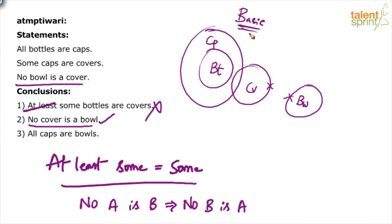And what's the thumb rule? If a conclusion does not follow the basic diagram, you can treat it as false. If a conclusion does not follow the basic diagram, it is definitely false. If it follows the basic diagram, then you have to worry about possible diagrams. So very clearly, the answer is only conclusion two follows.